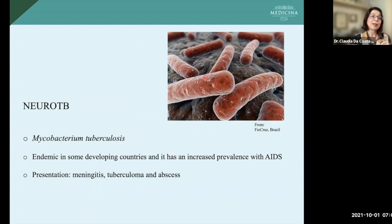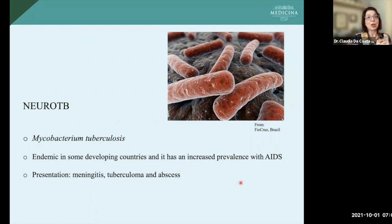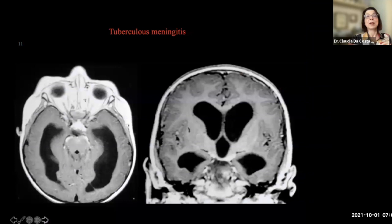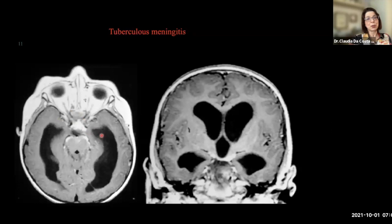The first we'll discuss is neurotuberculosis, caused by Mycobacterium tuberculosis. This is a bacteria that is endemic in some areas of the world, but it had increased prevalence with HIV. Meningitis can occur; we can also see tuberculomas, which are granulomas from the mycobacterium, as well as abscess. This is a baby with meningitis. We can see the characteristic finding of neurotuberculosis: thick meningeal enhancement on the basal cisterns. On this case, we can also see dilatation of the ventricular system — the third ventricle and lateral ventricles — due to hydrocephalus.